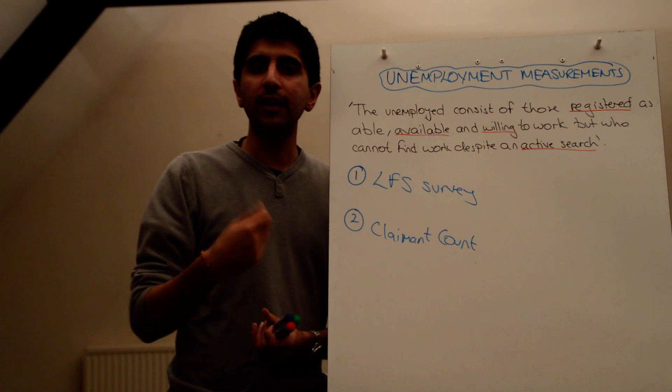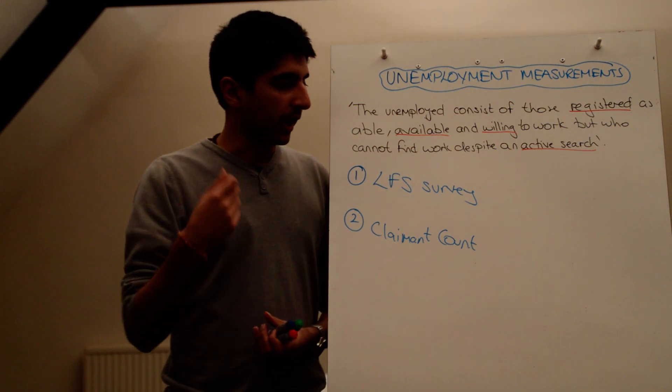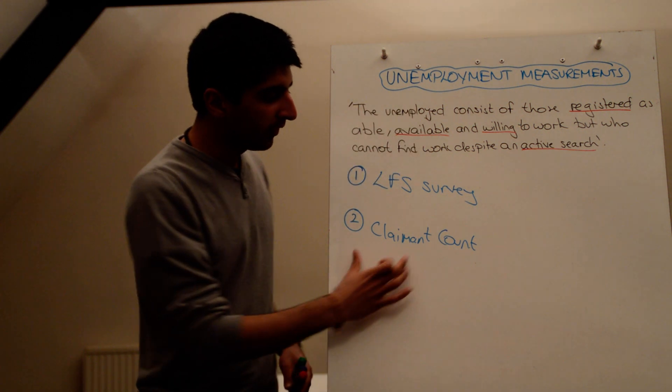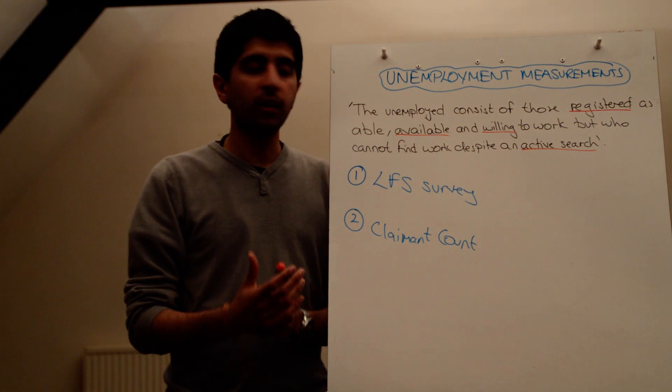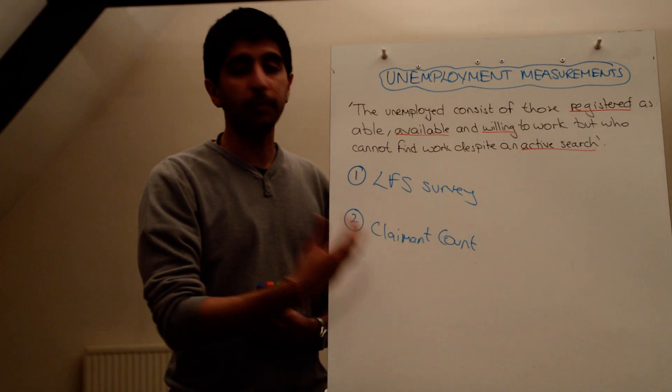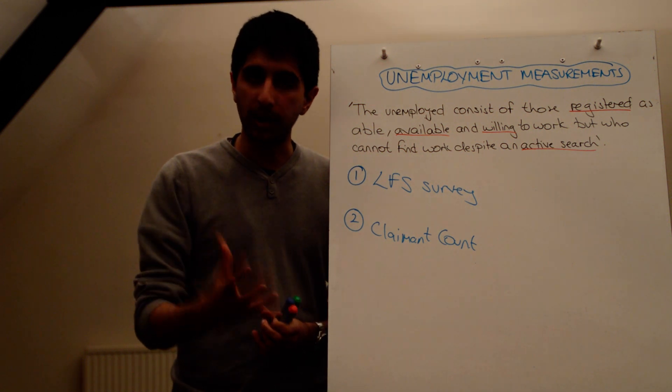So, this survey in the UK is sent to about 60,000 different households, and these households then have to tick and basically say whether they meet that definition. If they do, they are unemployed. The claimant count, very simply, is a measure of the number of people who are claiming unemployment benefit, so a jobseeker's allowance in the UK. The number of people claiming that benefit are then determined as unemployed.